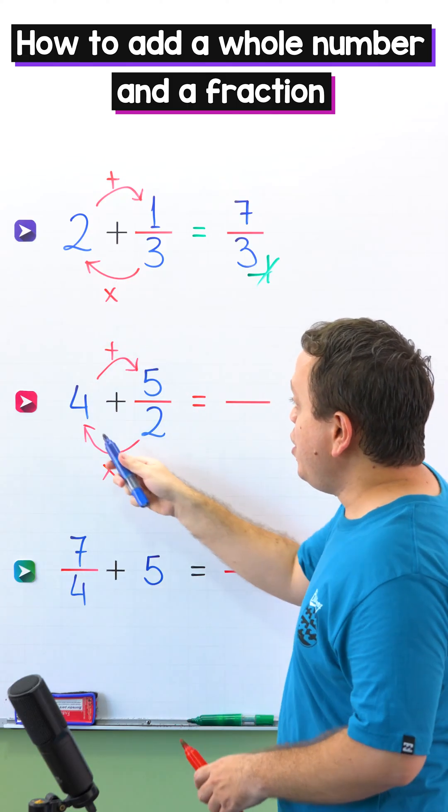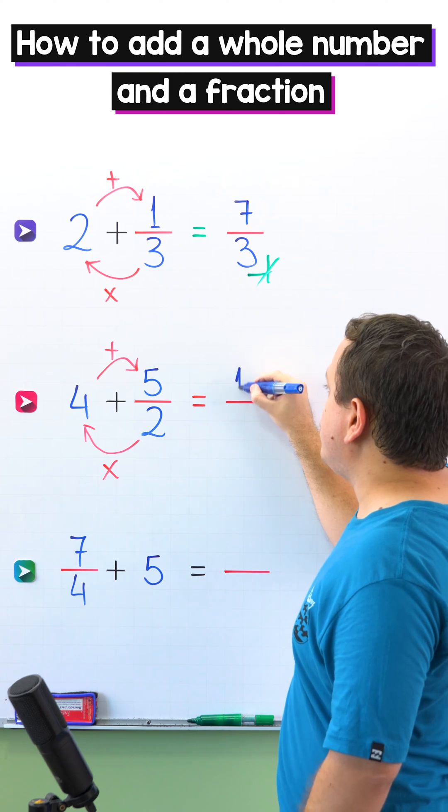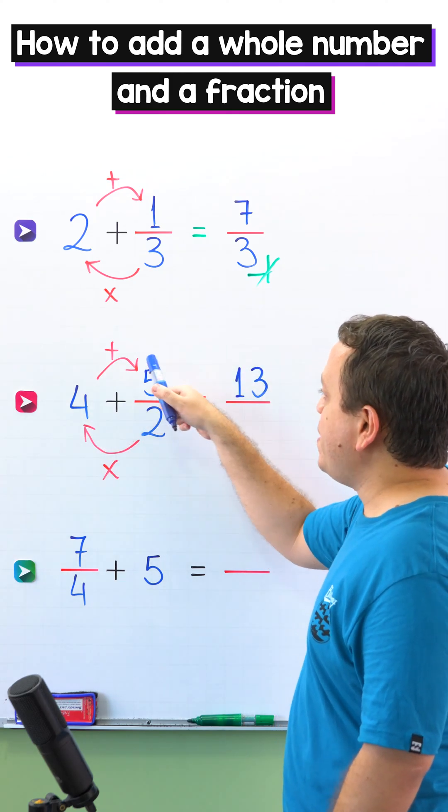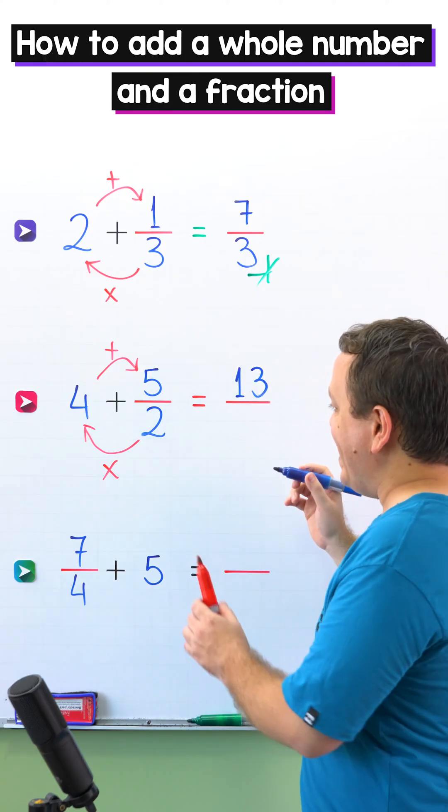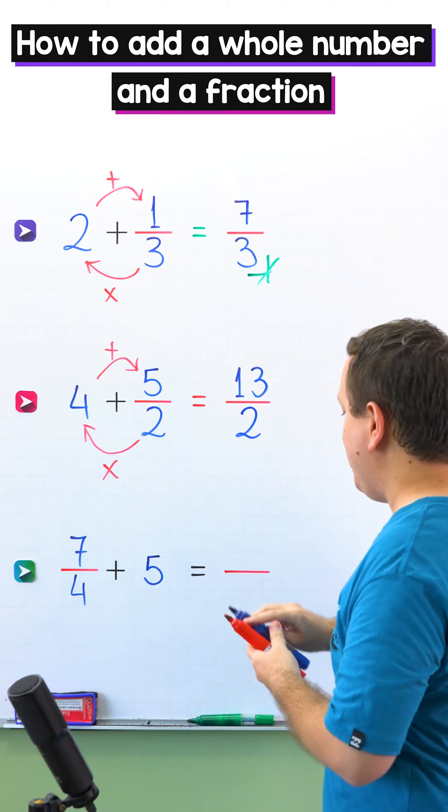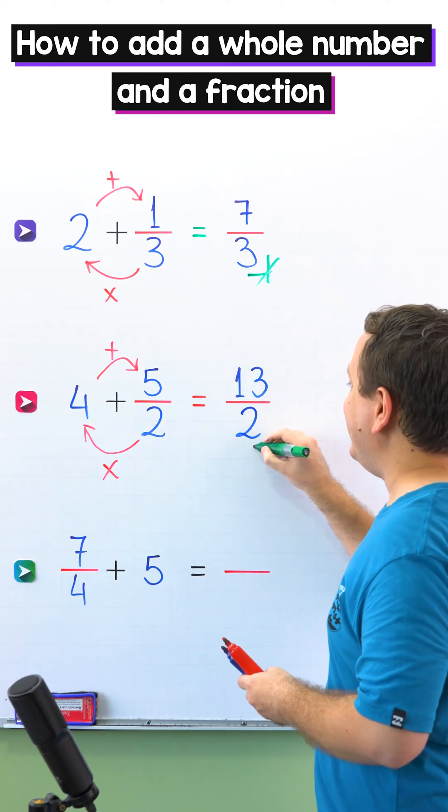2 times 4 is 8 plus 5 is 13. One more time, 2 times 4 is 8 plus 5 gives us 13. Next, the denominator stays the same, so we put the 2 over here. Our final answer is 13 halves.